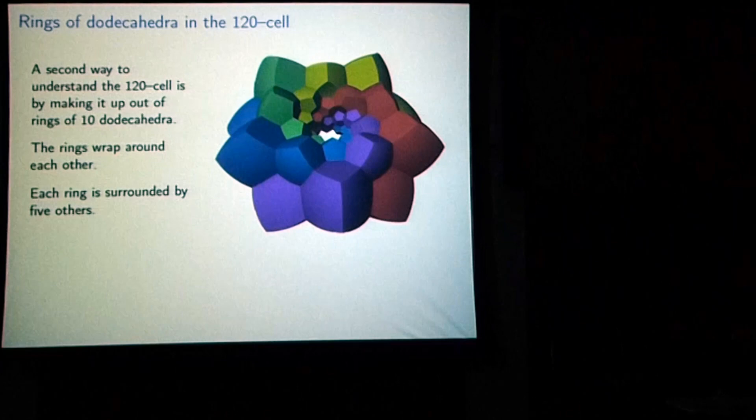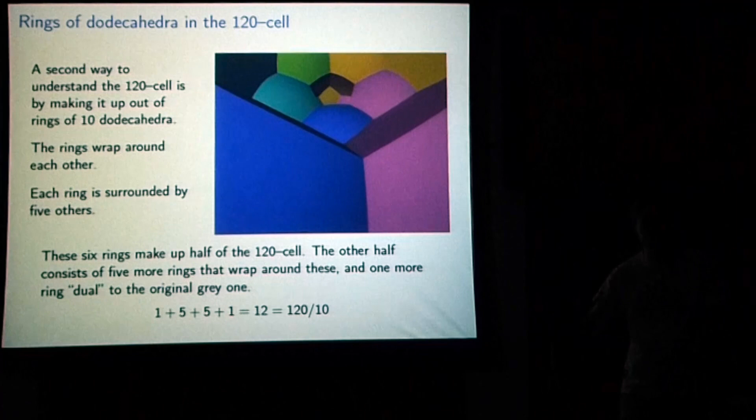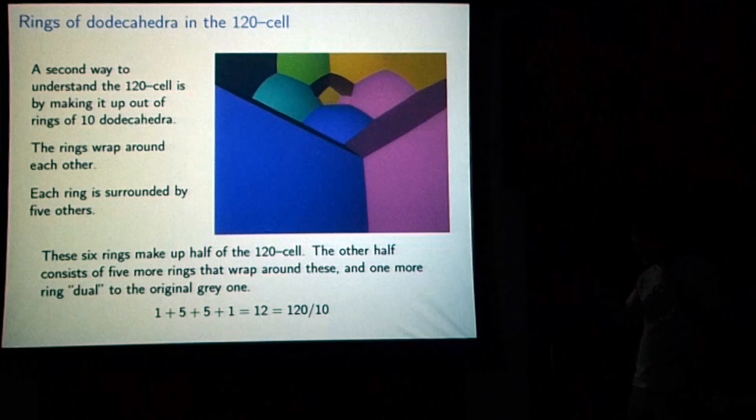We can continue. This is half of it. Here's the other half: the seventh ring, eighth, ninth, tenth, and eleventh. And we're sitting inside of the twelfth one, so I haven't drawn that one in. The 120-cell has a kind of grain — it's fibered by these rings of dodecahedra.